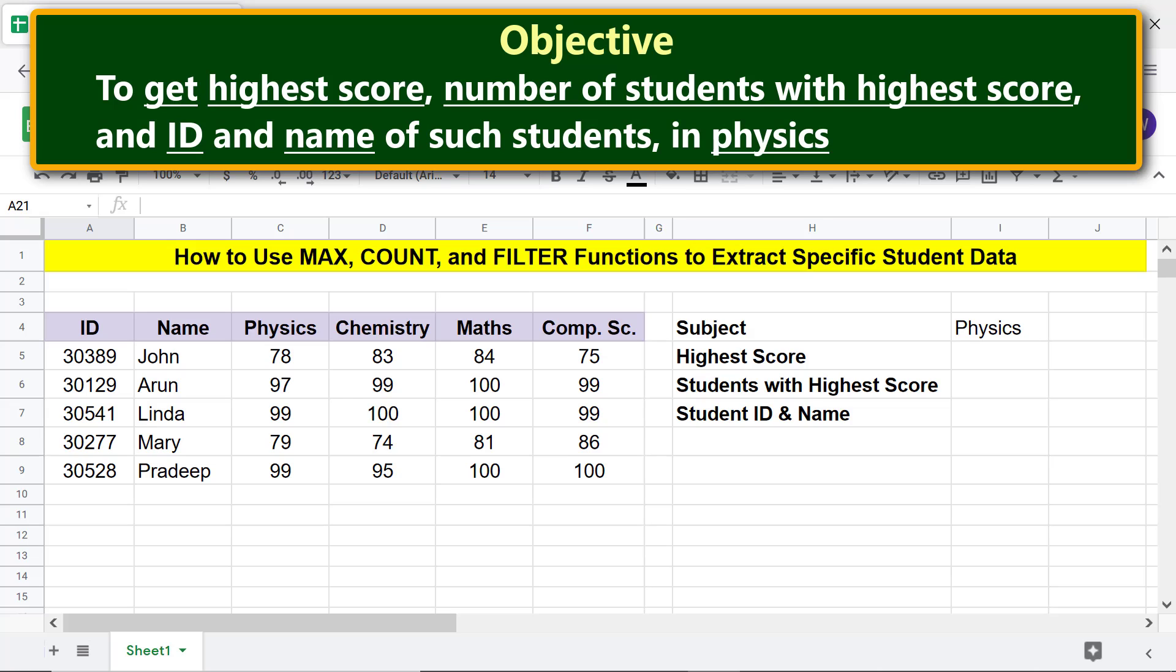Here is the format of the MAX function formula. First type equals M-A-X and select MAX. For value 1, select this range. We are selecting this range because we want to get the highest score in physics.